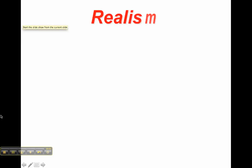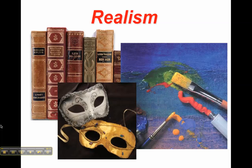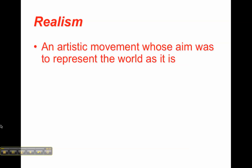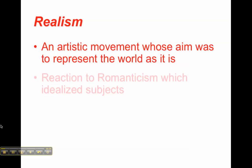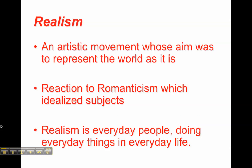Our next focus of 1800s popular culture is an artistic movement called Realism. We'll look at some literature, some paintings, and add a different category — drama — to help understand what Realism is. In a nutshell, Realism is an artistic movement whose aim was to represent the world as it is. It's a reaction to Romanticism, which idealized subjects. This was especially important during the Industrial Revolution, because real life doesn't look the way it did in Romantic literature and paintings. Realism is just everyday people doing everyday things in everyday life.